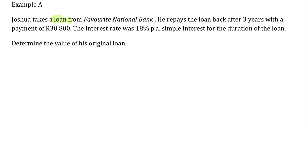Joshua is going to repay this loan back after three years, so that three years represents our time, our N value, with a payment of 30,800 rand. In a loan, our payment is an A value — that's the total amount. Inside that 30,800 is his loan plus the interest that he was charged. The rate of interest was 18% per annum, simple interest for the duration of the loan.